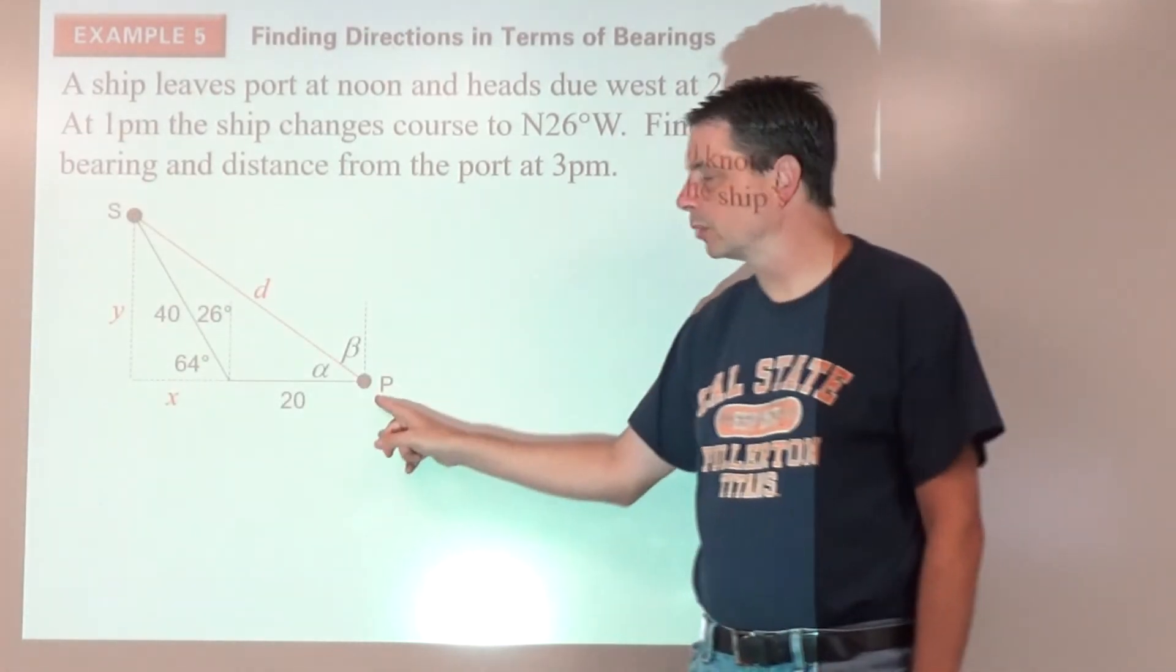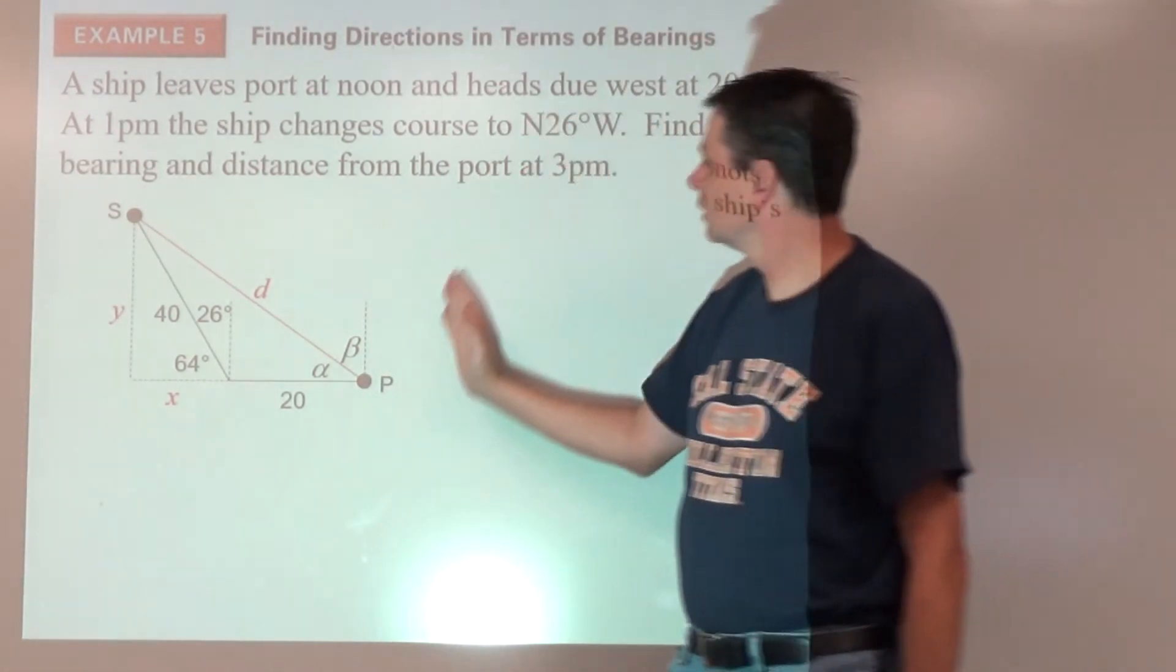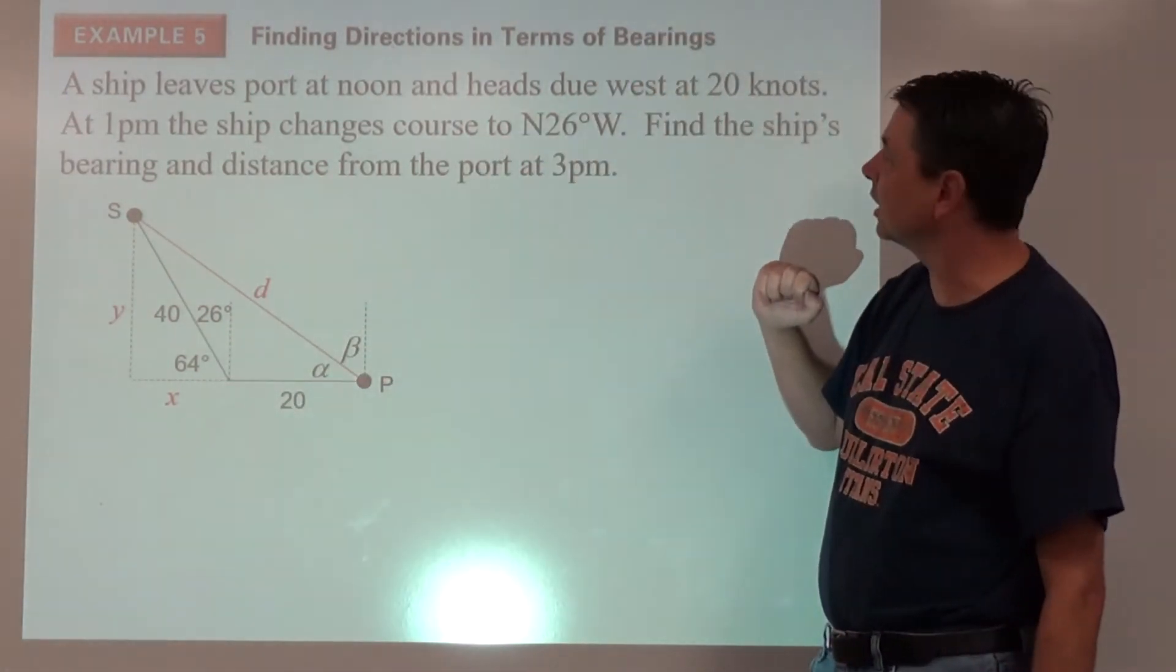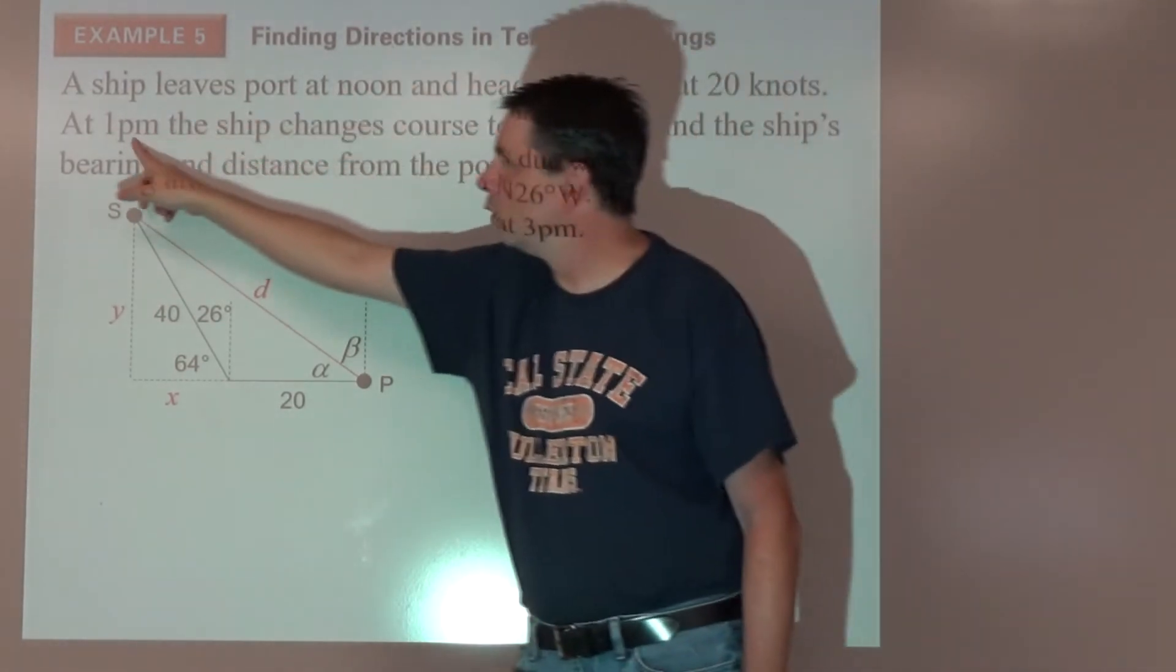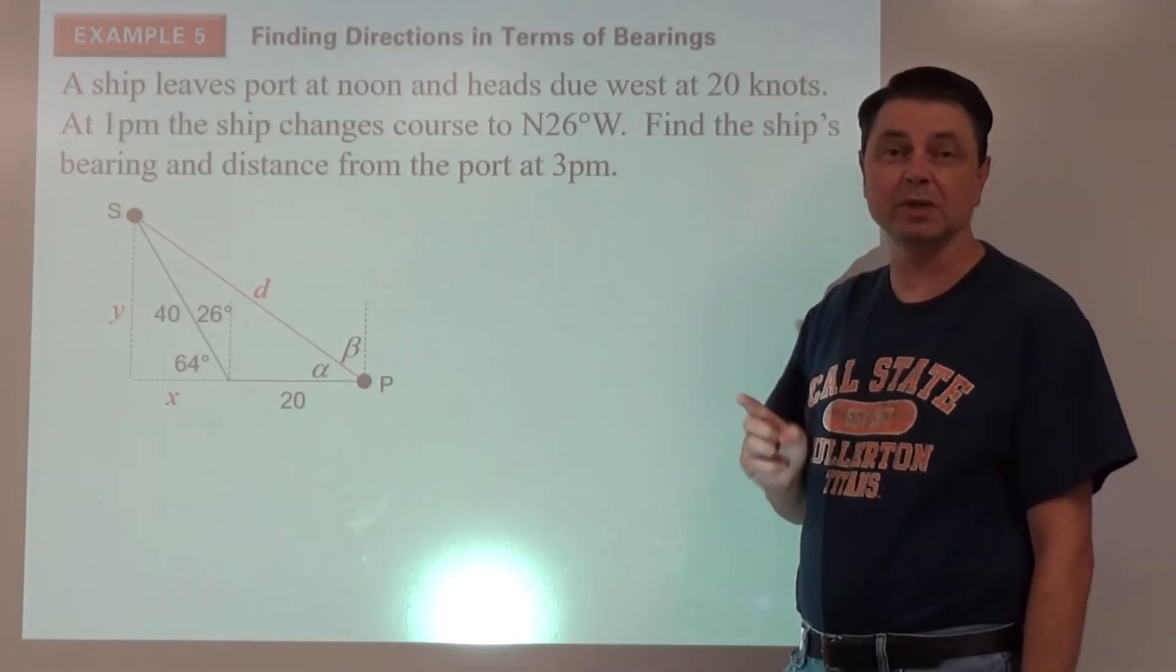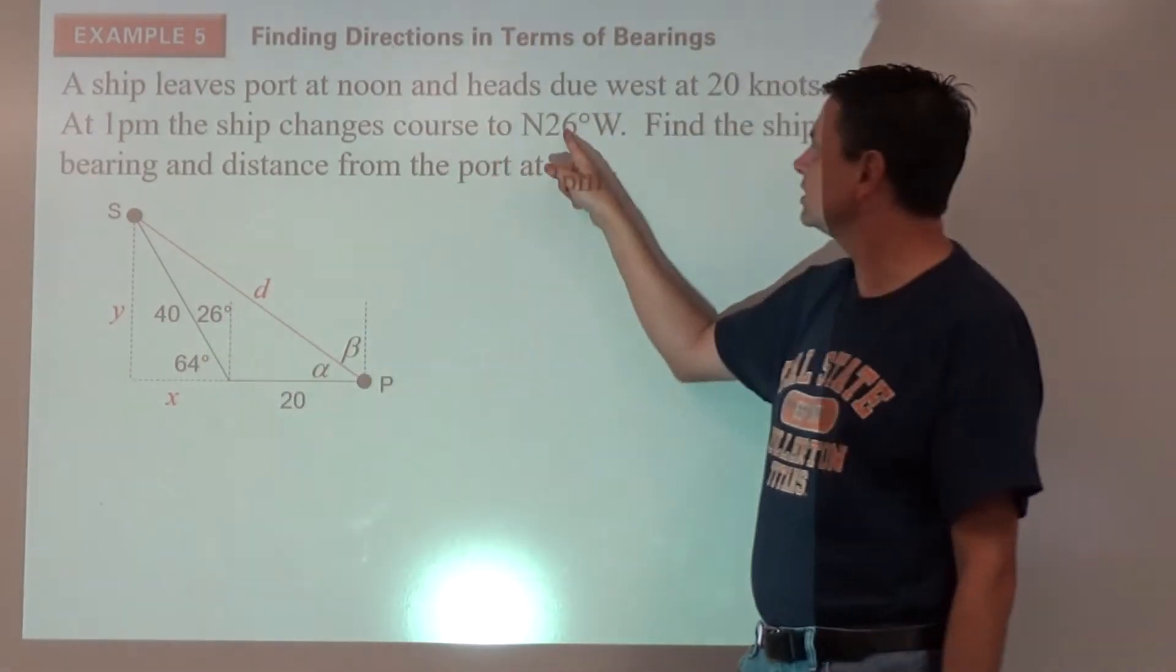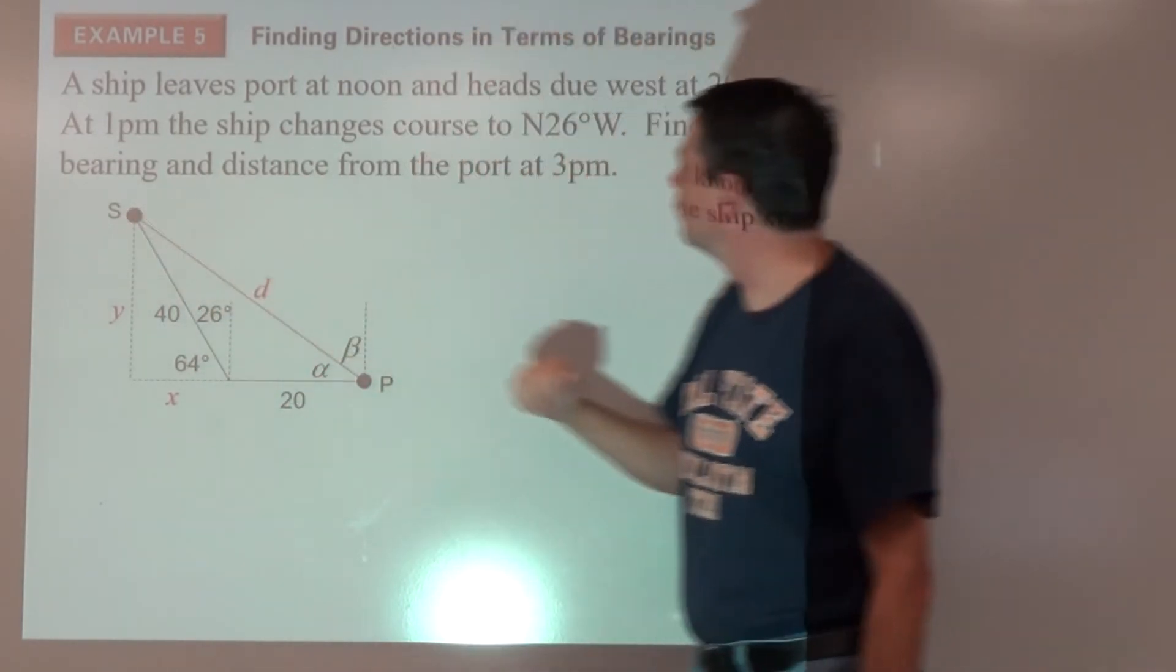Here's what we've got, our port. From the north, we're going to go due west first, 20 knots, meaning 20 nautical miles, and that happens from noon until one, so one hour, 20 nautical miles per hour, which just means 20 nautical miles traveled. Then we're going to change direction from the north, 26 degrees bent towards the west, and then we're going to go along that way.